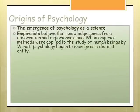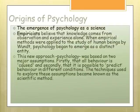Psychology as a science. Empiricists believed that knowledge comes from observation and experience, and this is where Wundt started to emerge psychology as a science because it was based on observations. It was based on two assumptions: firstly, that all behaviour has a cause, and then the ability to predict the behaviour. Once we know the cause, we should be able to predict how people would behave in different situations. This becomes later known as the scientific method.